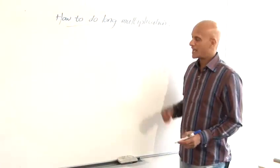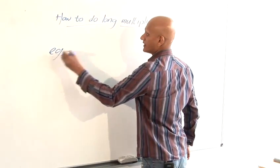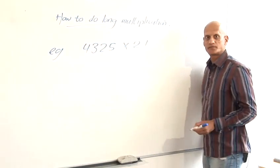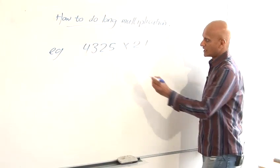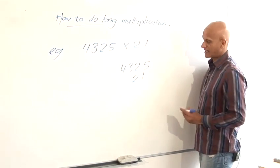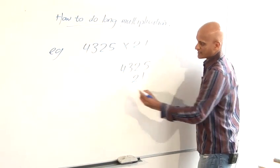How to do long multiplication. So the example I'm going to do is 4325 times 21. So the first thing I'll do is write the 4325 and then write the 21 underneath it so that they're lined up on the right hand side.